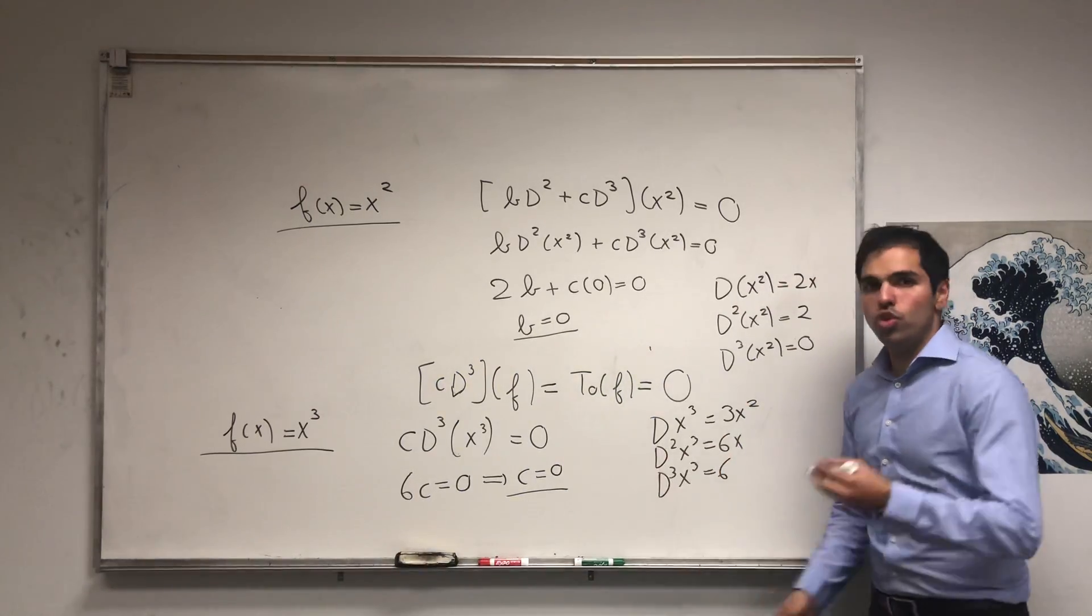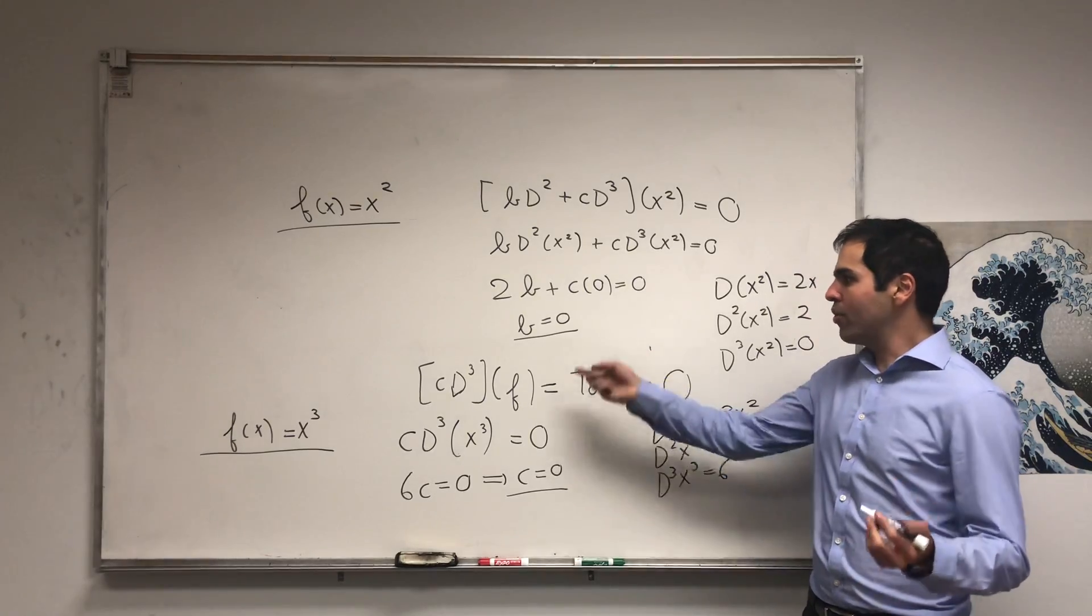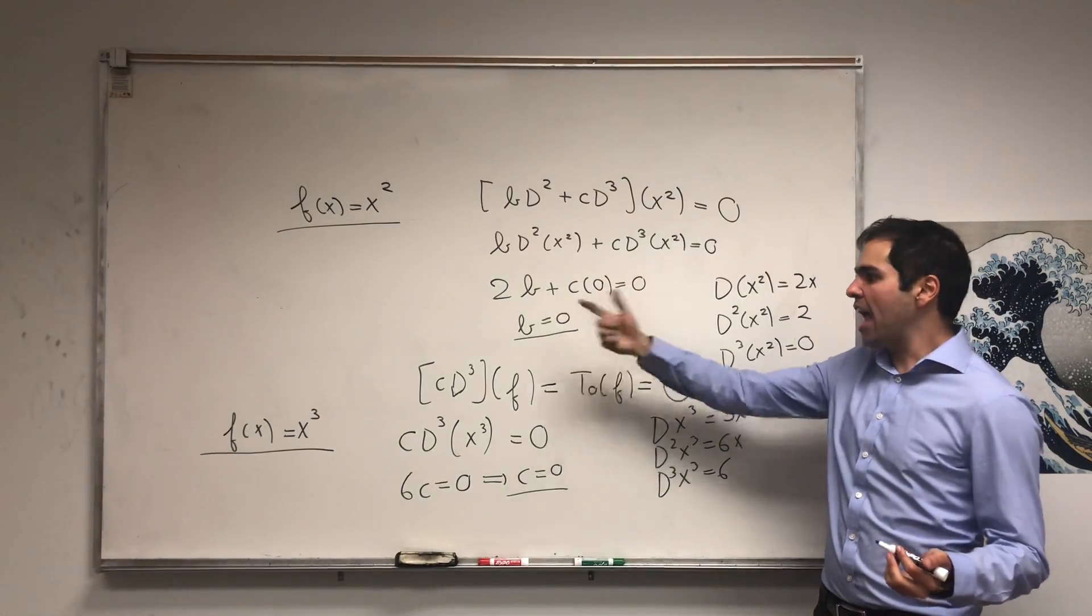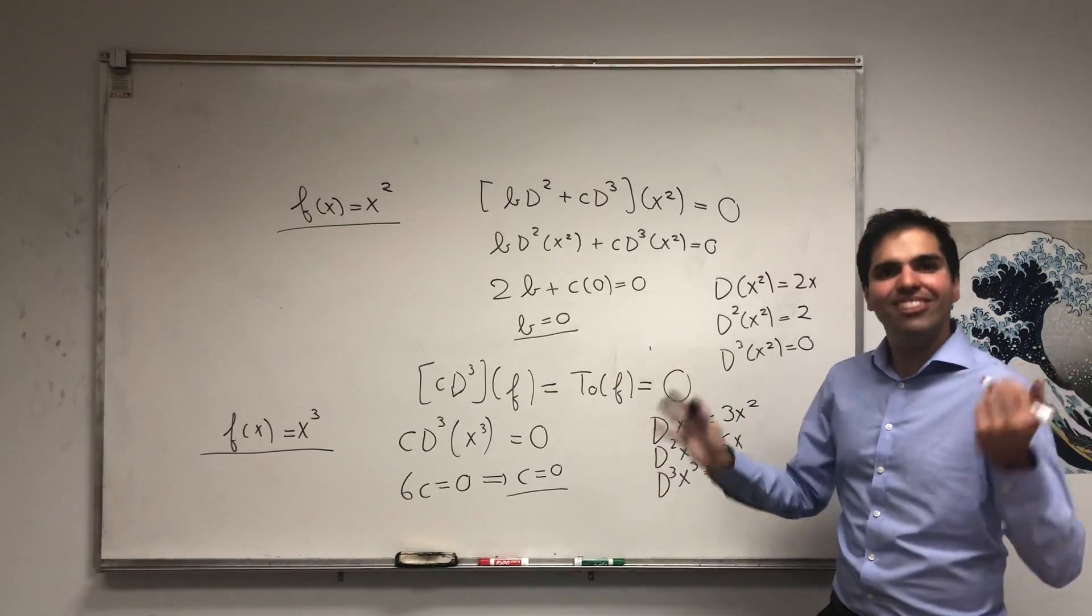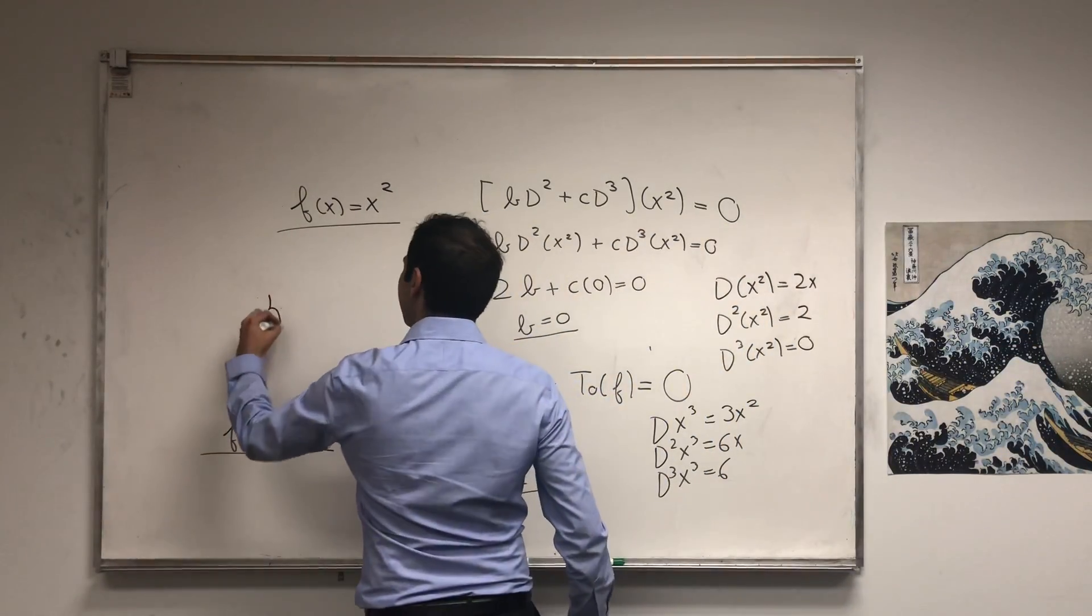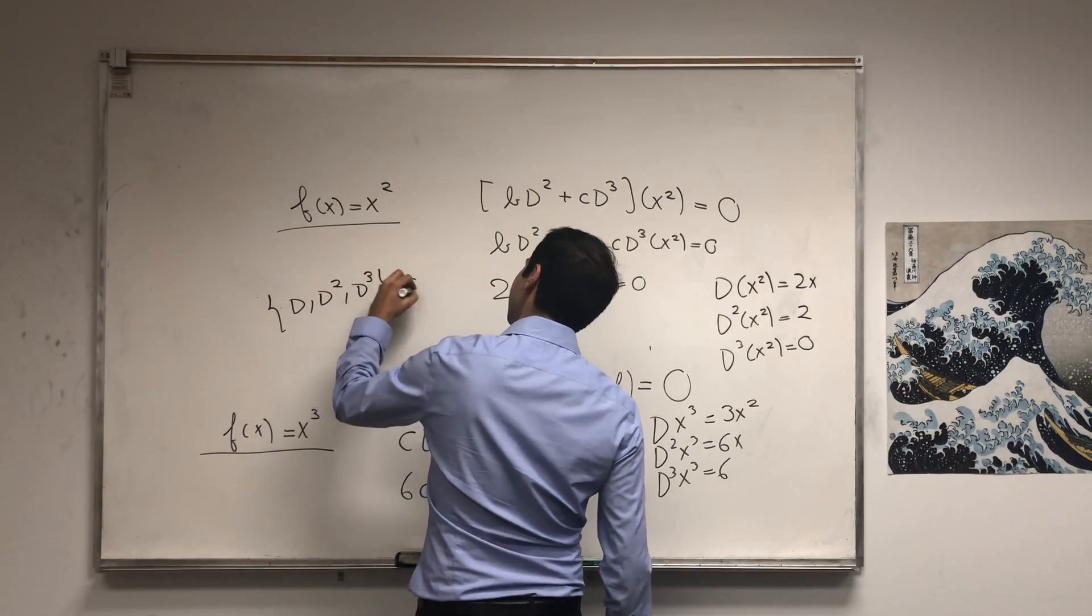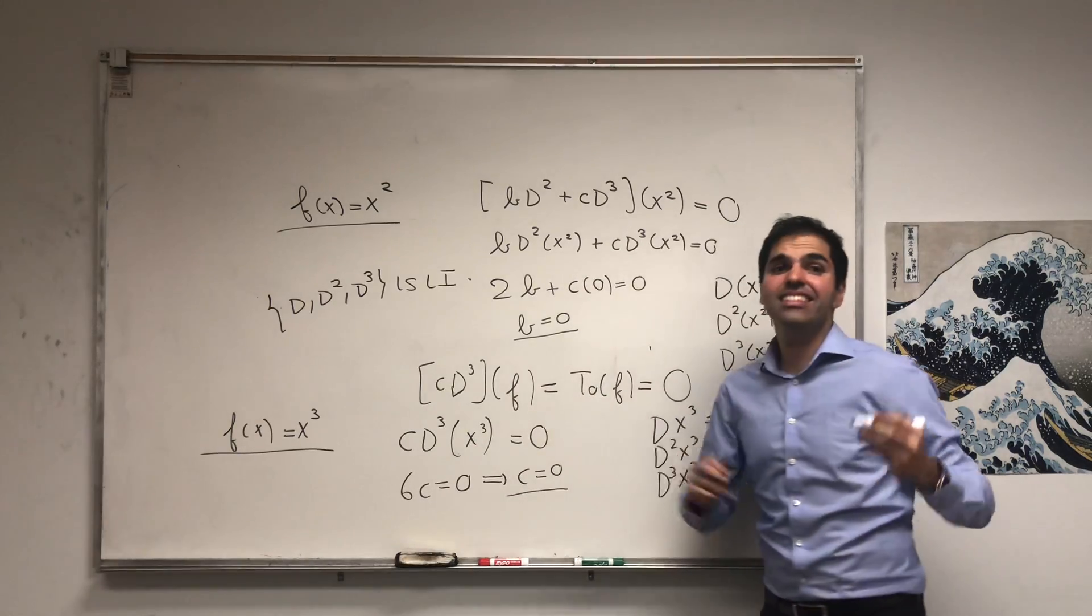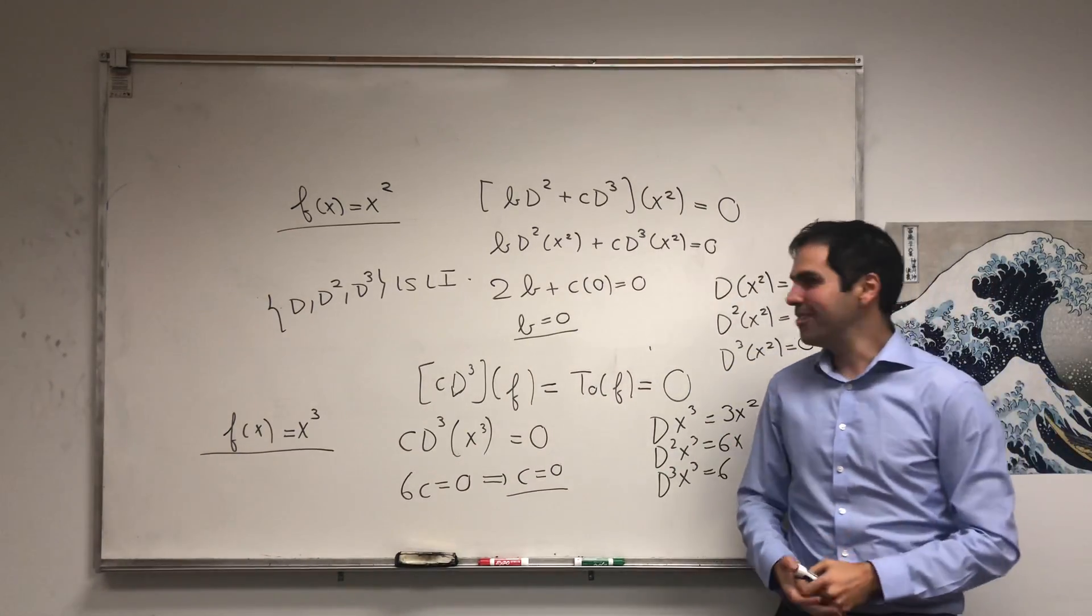So what do we get? We assume some linear combo gives you the zero operator, and we show that a is zero, b is zero, c is zero. So indeed, we can conclude legitimately that D, D², D³ is linearly independent. So in this sense, differentiation is linearly independent, which is really cool.